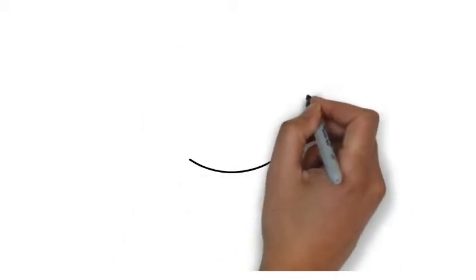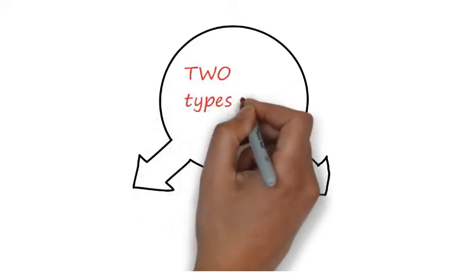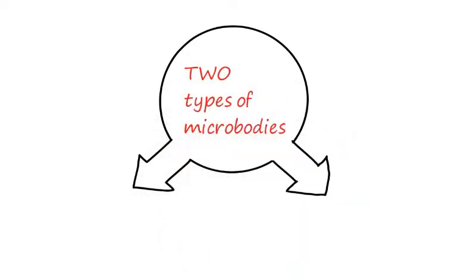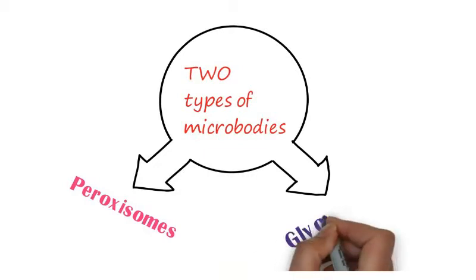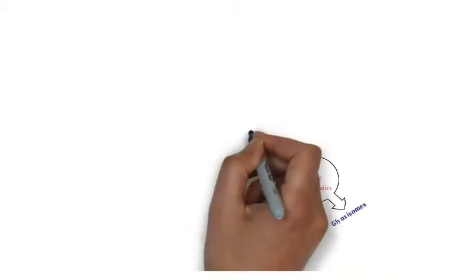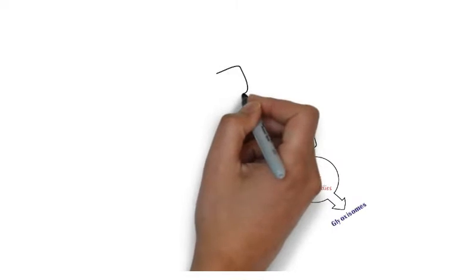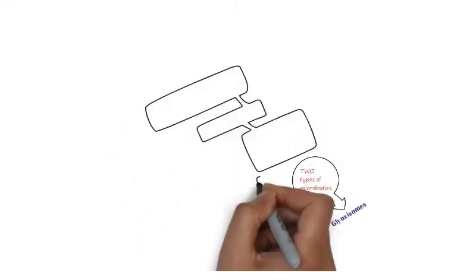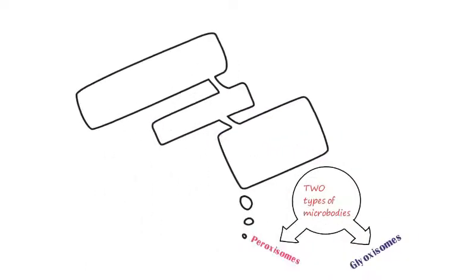Today we will discuss microbodies. There are two types of microbodies: peroxisomes and glyoxysomes. Now we will discuss the first one, peroxisomes.